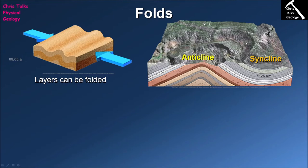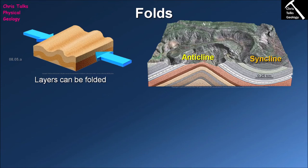The other type of fold is a syncline. In a syncline, it's not an arch but a trough — the fold is pointing down. In terms of rock age, the syncline is the reverse situation: the rocks in the core of the syncline are the youngest, while rocks on the outer edge are the oldest. By using both the shape of the fold and the relative age of rocks, we can identify whether we're looking at an anticline or a syncline.